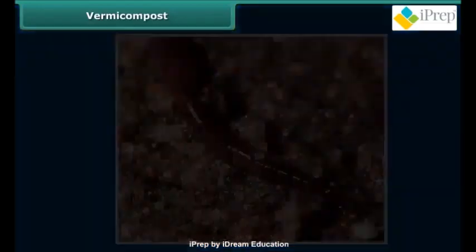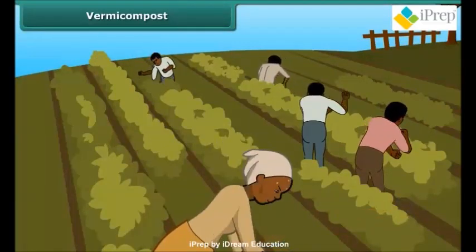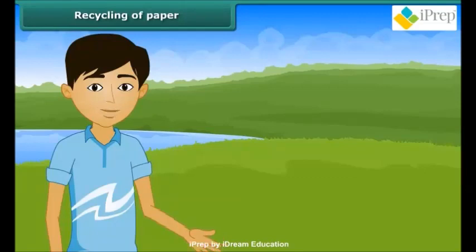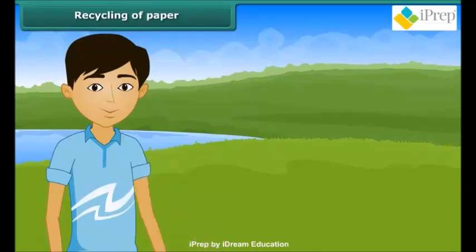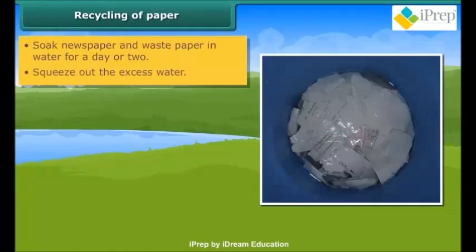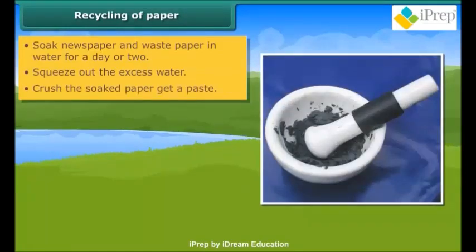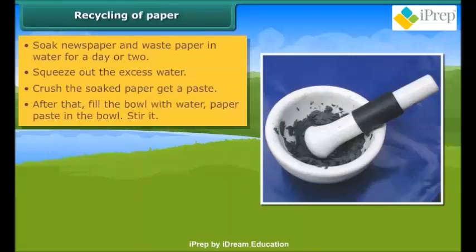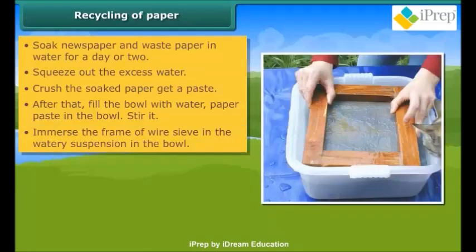The compost obtained from vermicomposting is used in agriculture. Now we will learn about the recycling of paper. Paper recycling is the process of recovering waste paper and remaking it into new paper products. For the recycling of paper, old newspapers, old envelopes, magazines, old notebooks, useless paper, a bowl, and a wooden frame of wire sieve are required. The steps involved are: soak newspaper and waste paper in water for a day or two, squeeze out the excess water, and brush the soaked paper to get a paste. Then fill the bowl with water, add paper waste, and stir it. Immerse the frame of wire sieve in the watery suspension in the bowl.